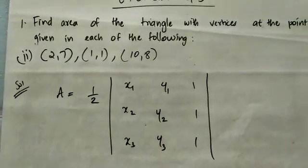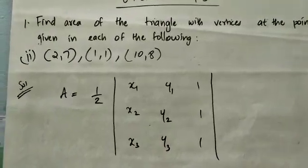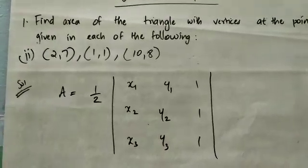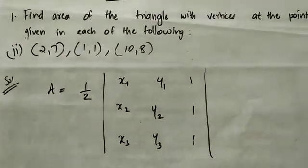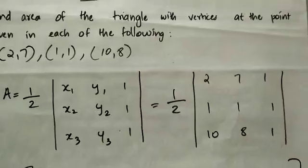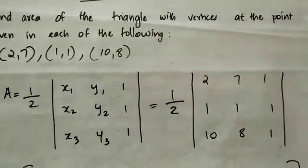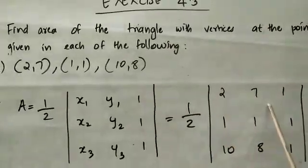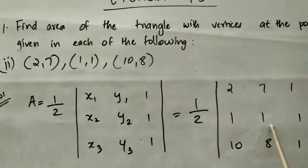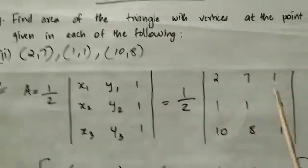Problem 2: vertices are (2, 7), (1, 1), (10, 8). We substitute x1, y1, x2, y2, x3, y3 into the same determinant area formula.